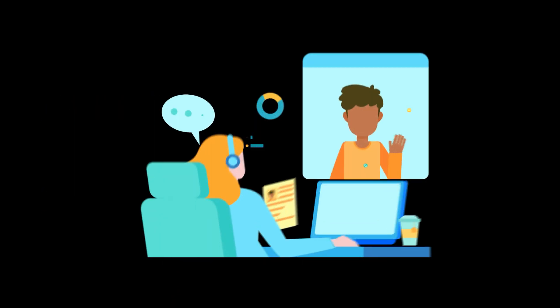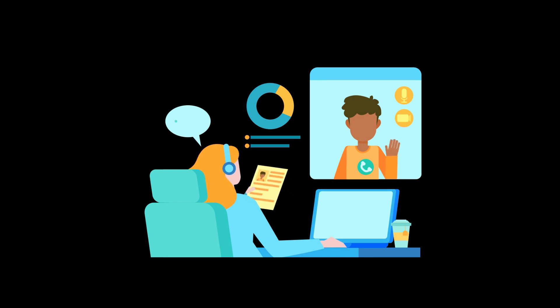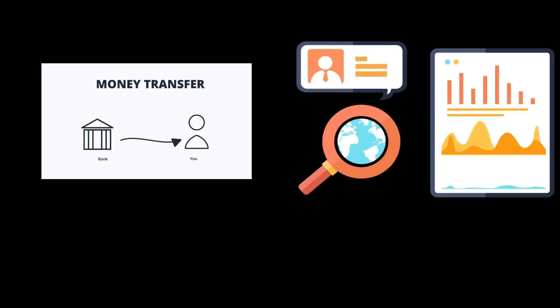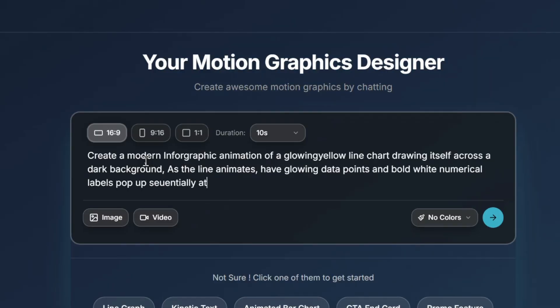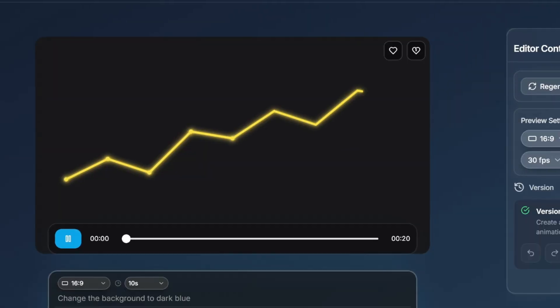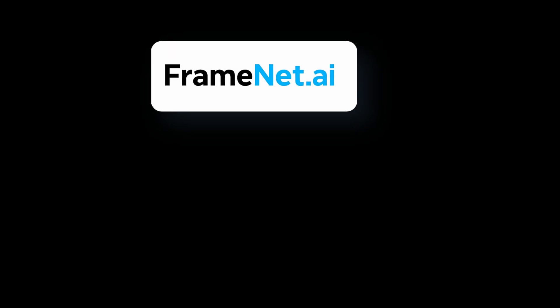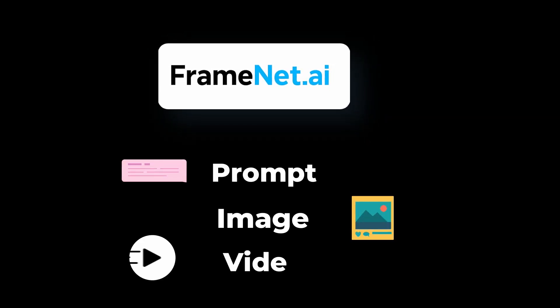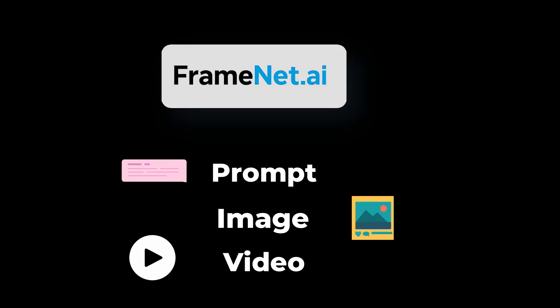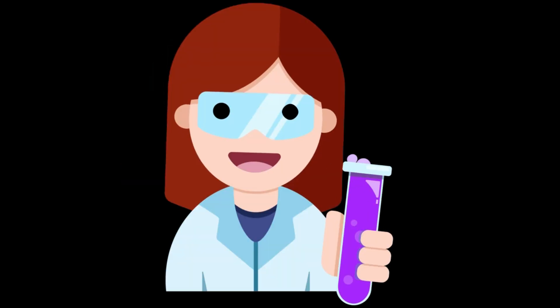Stick with me — I'll show you how to use it, how to get the best output, and a little secret to save your time. You can make 2D animations, infographics, typography, almost any kind of visual you want using a simple ChatGPT-like interface. The tool is called frame.net.ai. You can provide inputs such as a prompt, a reference image, or a reference video, and it will generate animations based on these.